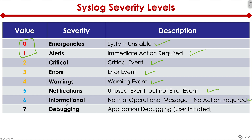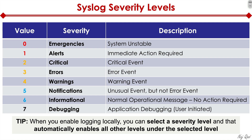Severity level six means it's informational — a normal operational message with no action required on your end as an administrator. Level seven is debugging, which is application debugging on your device and is initiated by the user. Typically it's used if you're trying to debug OSPF or IP packets; your device can start generating debug messages that you can later analyze to figure out if your device or protocol is misbehaving.